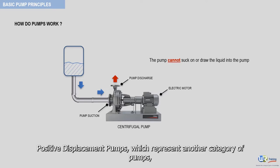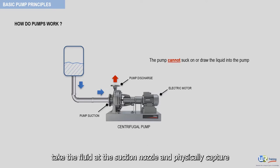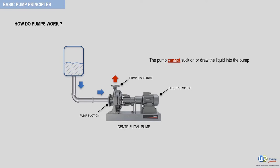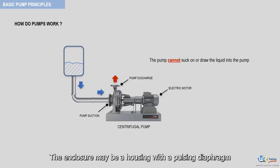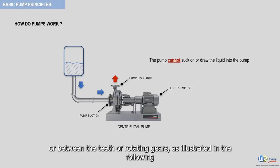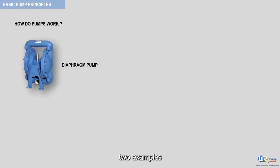Positive displacement pumps, which represent another category of pump, take the fluid at the suction nozzle and physically capture and contain the fluid in some kind of movable enclosure. The enclosure may be a housing with a pulsing diaphragm or between the teeth of rotating gears, as illustrated in the following two examples.